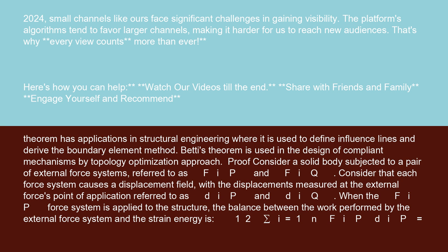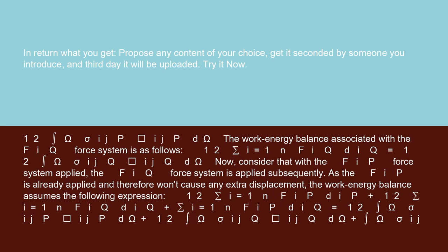Proof: consider a solid body subjected to a pair of external force systems, referred to as F_iP and F_iQ. Consider that each force system causes a displacement field, with the displacements measured at the external forces' point of application referred to as D_iP and D_iQ. When the F_iP force system is applied to the structure, the balance between the work performed by the external force system and the strain energy is: (1/2) Σ(i=1 to N) F_iP · D_iP = (1/2) ∫_Ω σ_ijP · ε_ijP dΩ.